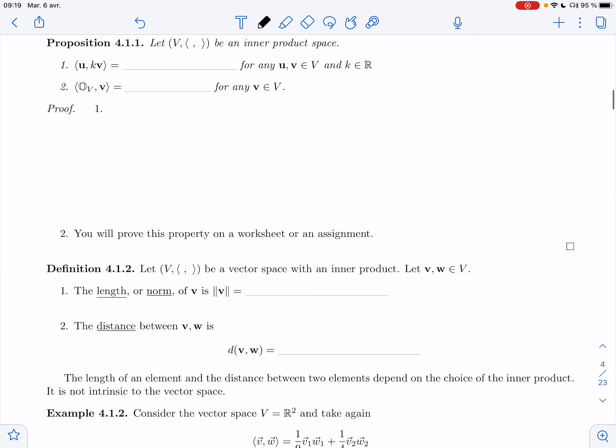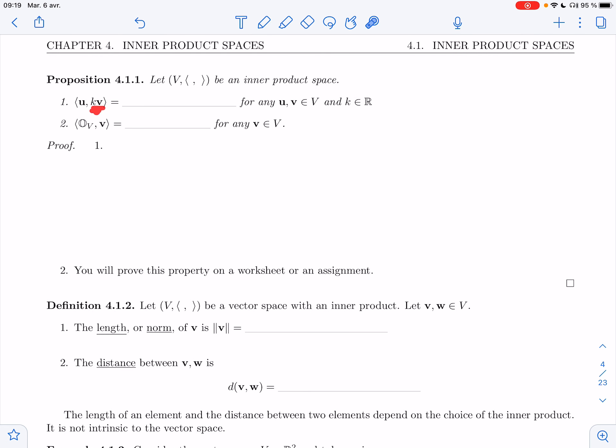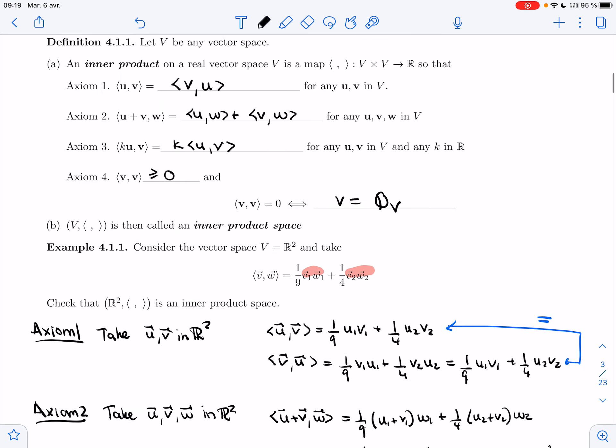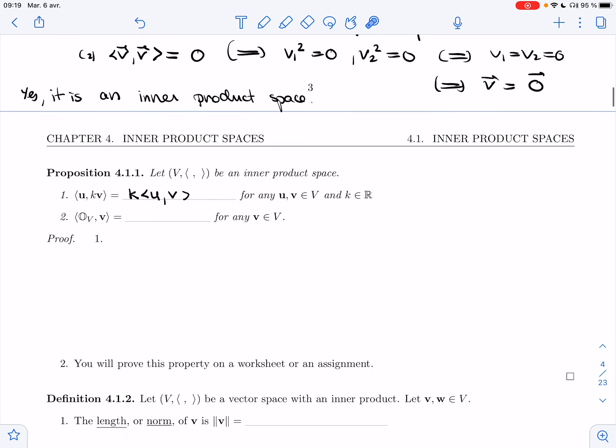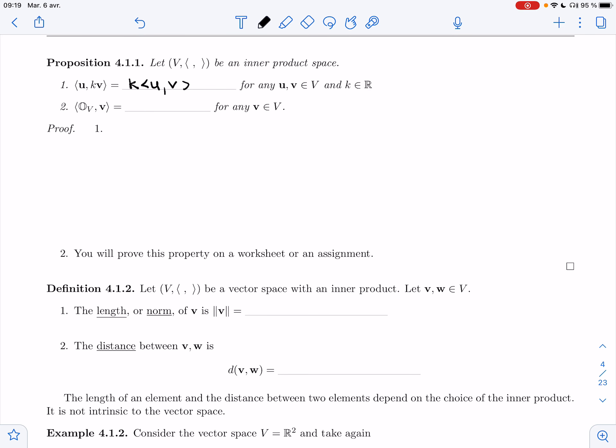First thing I want to prove is that if I have a k on the v, I can take it out as well. So part of the axiom, axiom 3, told us that if there's a k on the u, I can take it out. I want to prove that I can take it out of the v as well. That's not going to be hard.